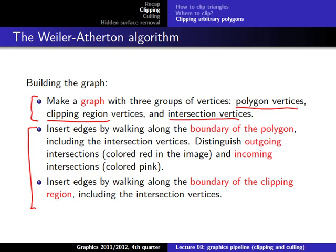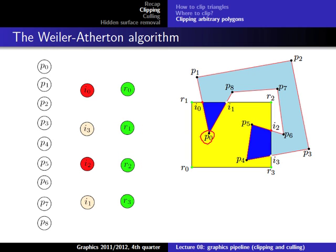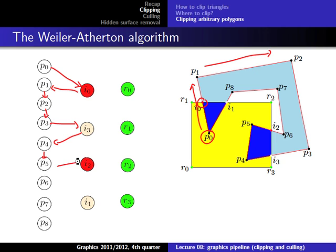First, we enter edges by walking along the boundary of the polygon, including the intersection vertices when we come across one. Starting at P0: we go to the first intersection, then P1, P2, P3, then I3, P4, P5, I2, P6, P7, P8, then I1, and back to P0.